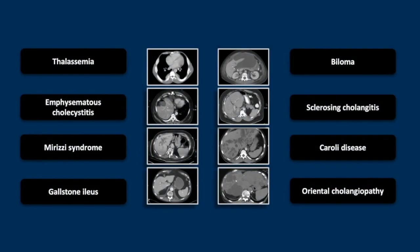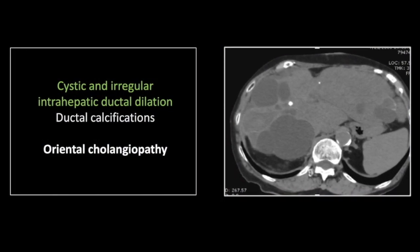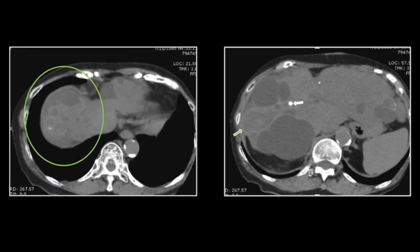Our next case is an unusual infection — oriental cholangiopathy. There are multiple dilated tubular and cystic structures throughout the liver. You can track most of these dilated hypodense structures back to a communication with the biliary system. In addition, there are numerous biliary calcifications throughout the liver — a telltale finding of clonorchis infestation and oriental cholangiopathy.